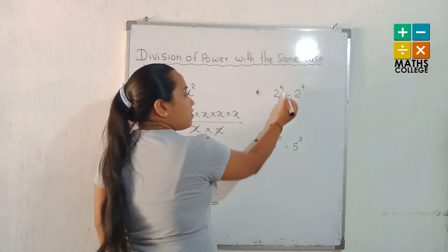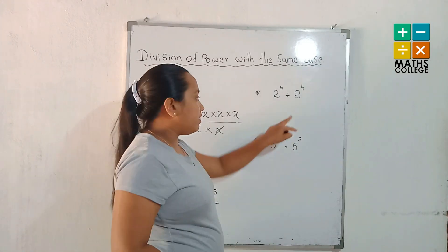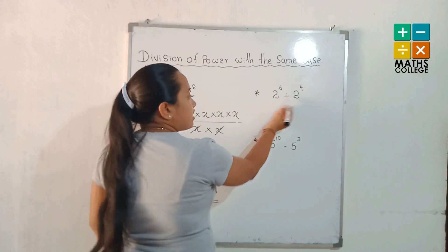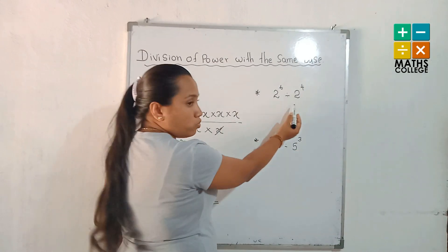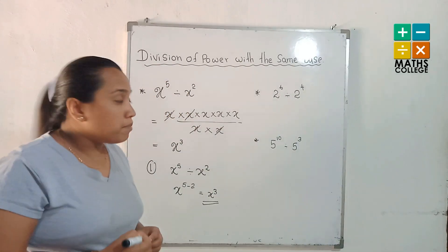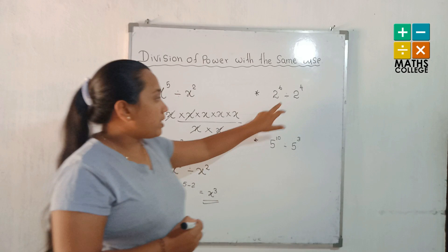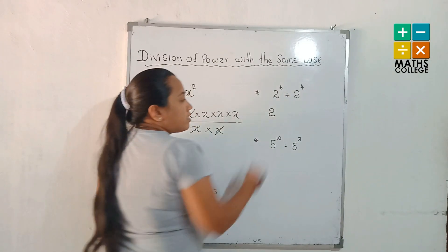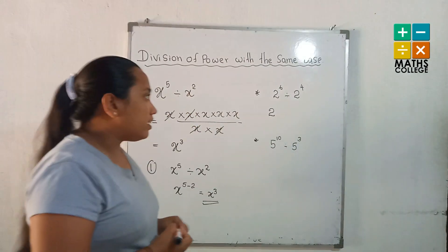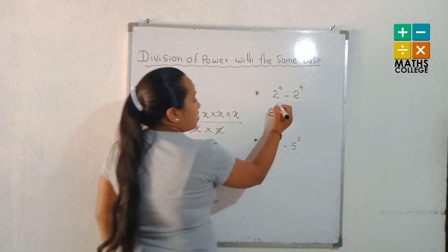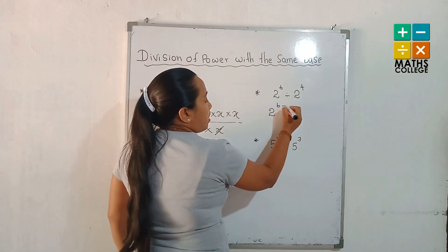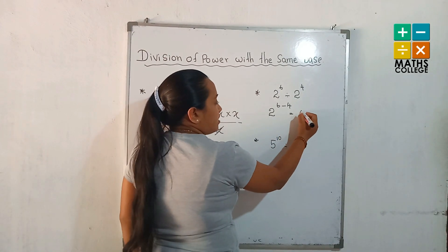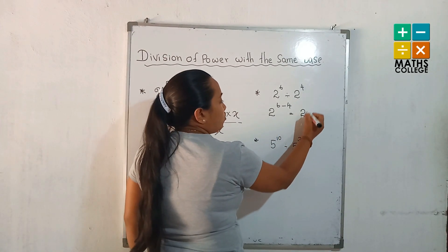Look at another example: 2 to the power 6 divided by 2 to the power 4. The base is the same — it's 2 — and the given mathematical operation is division. Then, subtracting the indices: subtracting 4 from 6. The answer is 2 to the power 2.